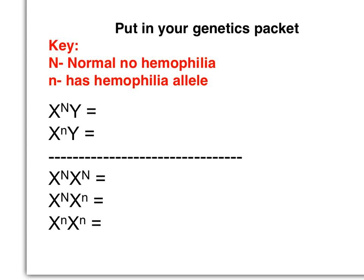In your genetics packet, there is a part for a key. We're going to look at hemophilia. Hemophilia is a blood clotting disorder — it is recessive and it's found on the sex-determining chromosome. For our key, when we do these problems, we need to use an X and a Y. Looking at the top of the key, these are going to be males because there's a Y — I have an X and a Y, so this is going to be a male. The next one is also an X and a Y, so it's a male as well.